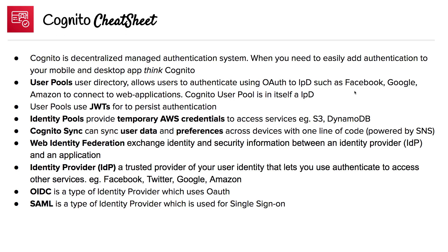Web identity federation — they're not going to ask these questions directly, but you need to know what these are. Web identity federation exchanges identity and security information between an identity provider and an application. An identity provider is a trusted provider used to authenticate or identify a user. You can use them to authenticate and access other services. OIDC is a type of identity provider which uses OAuth, and SAML is a type of identity provider used for single sign-on. That covers Cognito.